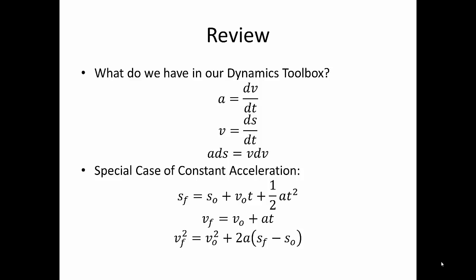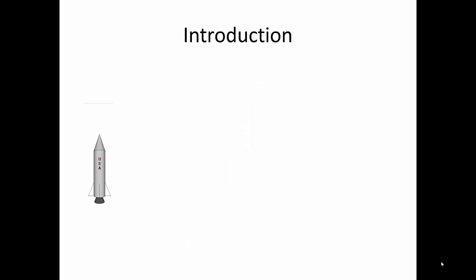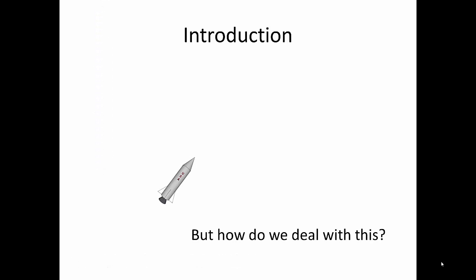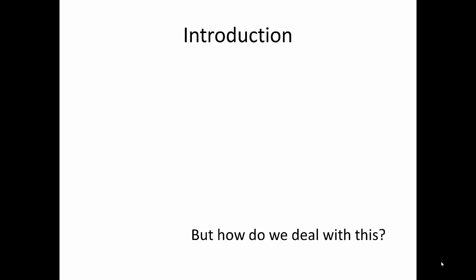We've used these equations in problems that are linear — a particle that travels in one direction. We've seen this type of motion: a rocket that shoots straight off into the air. But how do we deal with something like this, where the rocket follows a curved path?